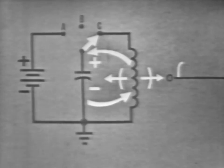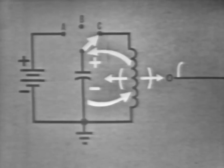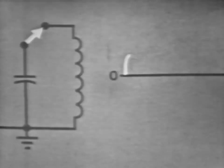Now, as you know, when current flows through a coil, the field about the coil expands as current increases. So as long as current increases, the field continues to expand. At the point when the charge on the capacitor is almost depleted, the amount of current begins to decrease. At the instant current begins to decrease, the coil will oppose this change.